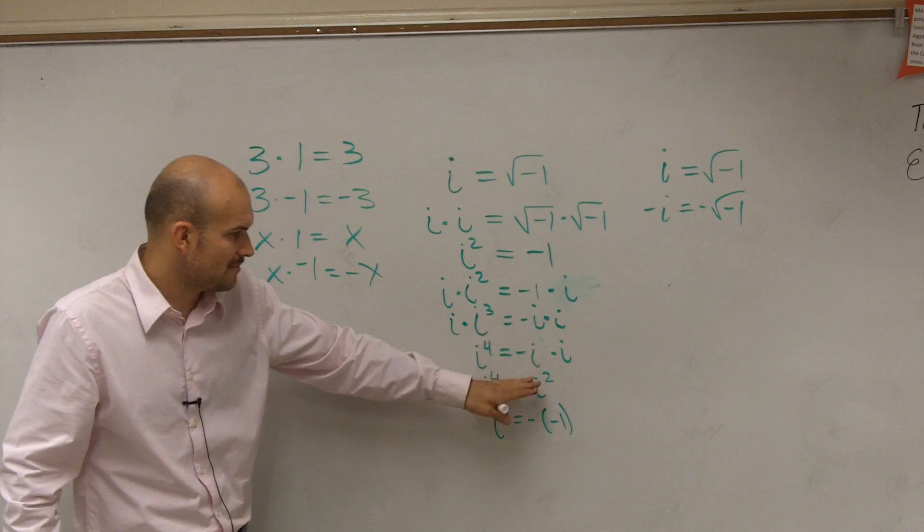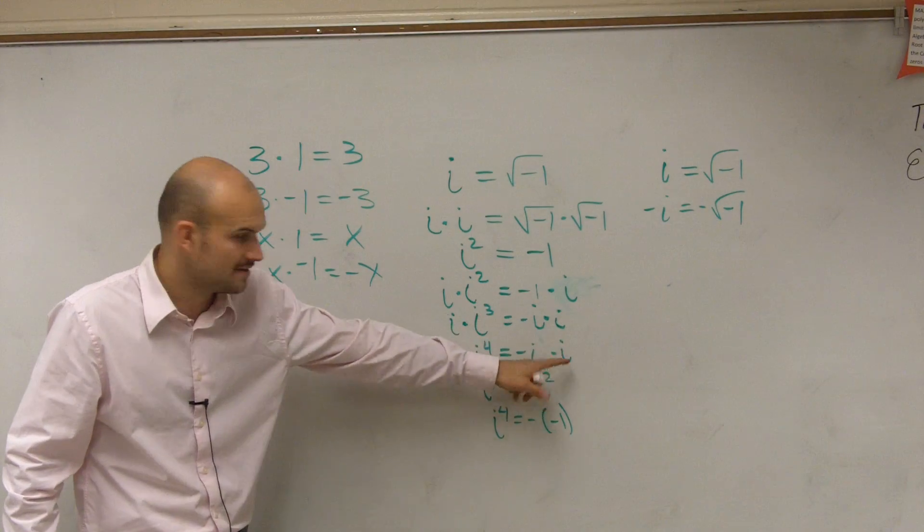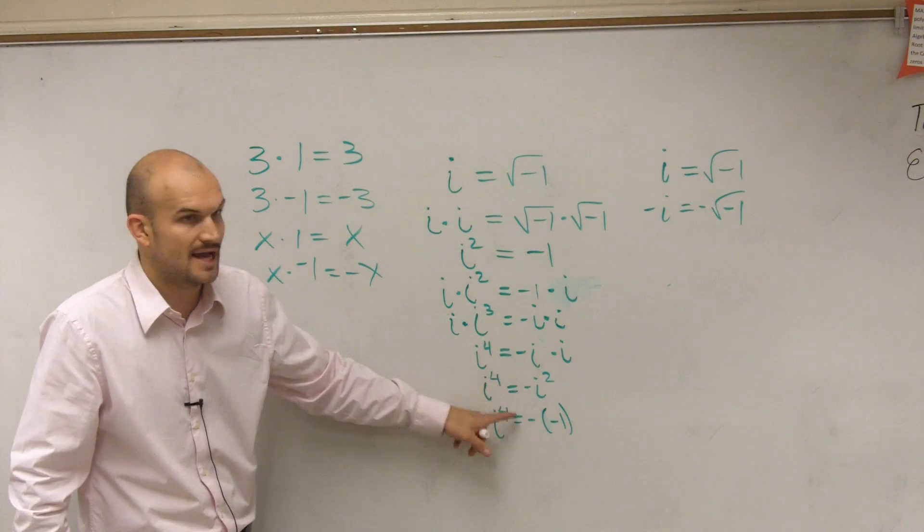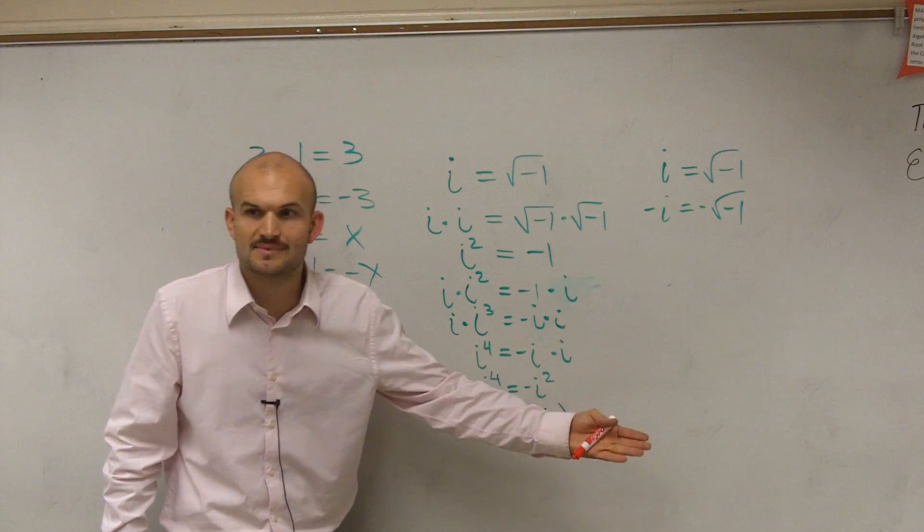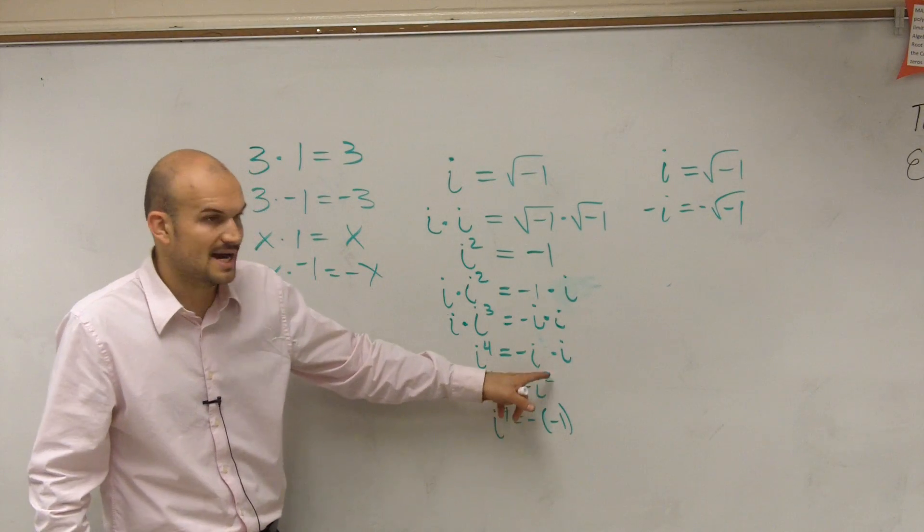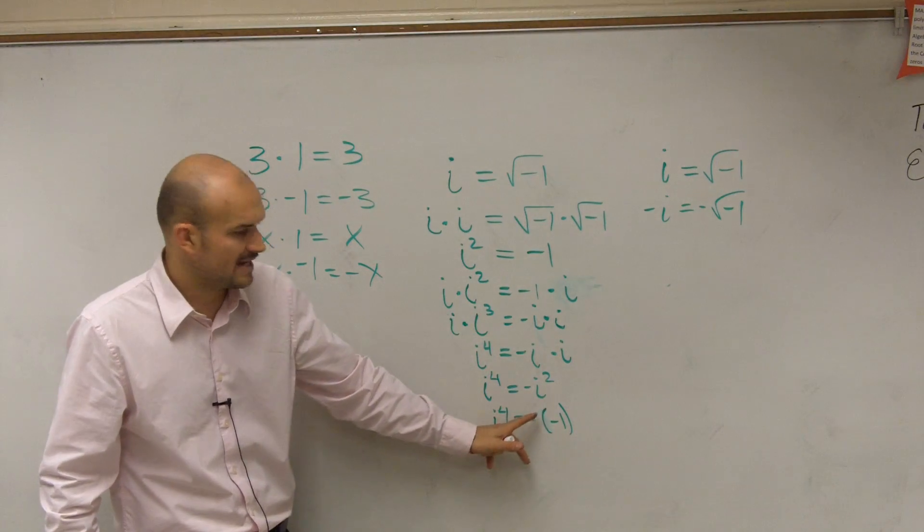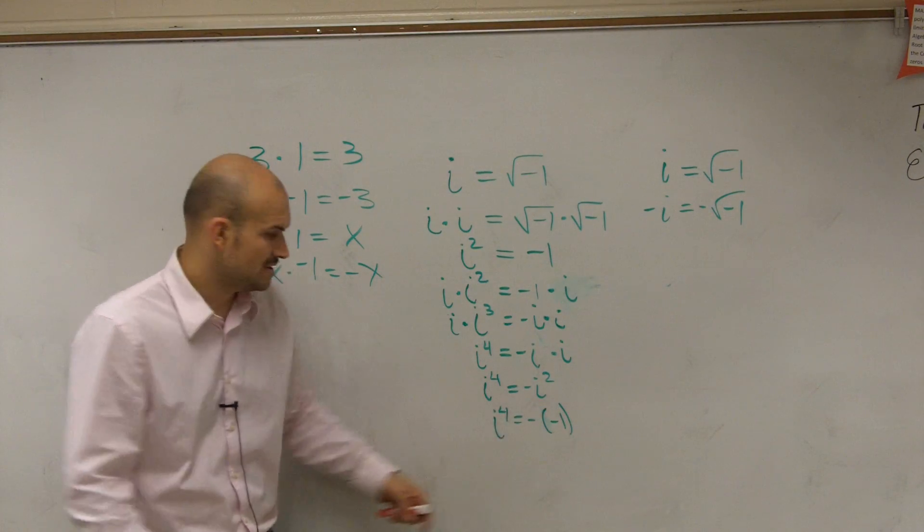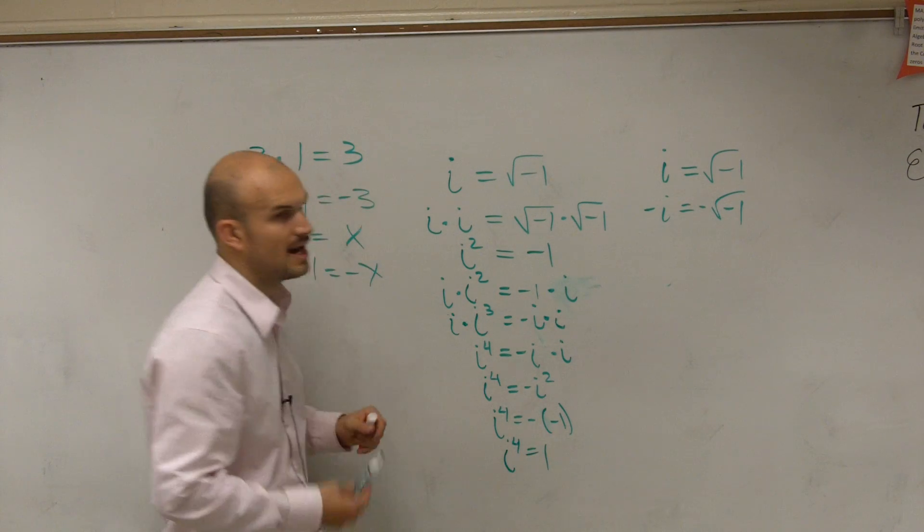So therefore, i to the fourth equals negative i times i. Which means you're going to get negative i squared, right? Negative x times x is negative x squared, right? Therefore, what's i squared? i squared is negative 1. So it's negative negative 1. Which ends up being i to the fourth equals positive 1.